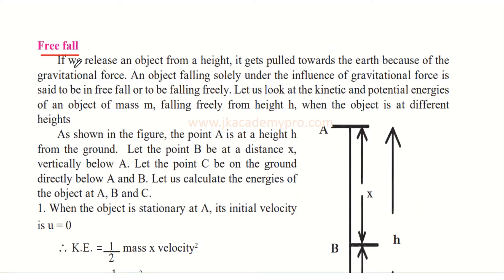The next topic is free fall. If we release an object from a height, it gets pulled towards the earth because of gravitational force. An object falling solely under the influence of gravitational force is said to be in free fall. Let us look at the kinetic and potential energies of an object of mass m falling freely from height h at different heights.